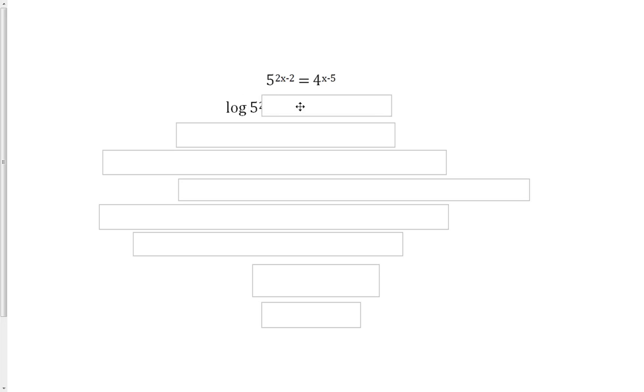So on the left, that's going to be the log of 5 to the 2x minus 2. On the right, that'll be the log of 4 to the x minus 5. Next, we can use the property of logarithms that says whenever you have an exponent of the main term, you can bring it out front.